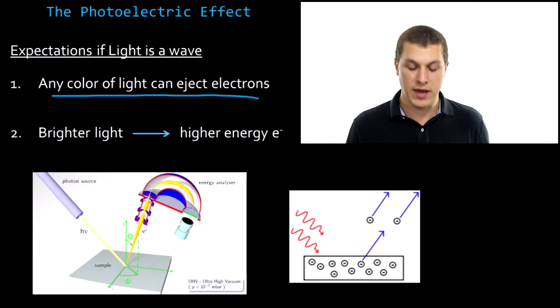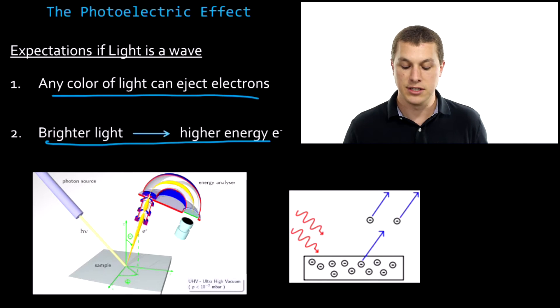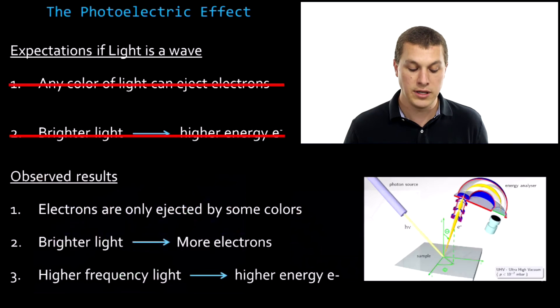The second thing we expect is as you make that light brighter, you get higher and higher energy electrons. So basically, you put in more energy with that light, you have a stronger electric field, you're going to accelerate that electron more. In fact, neither of these things were observed. So both of those turn out to be wrong. We didn't see them. And yet we'd expect that if light was just a wave.